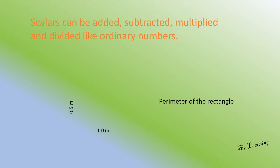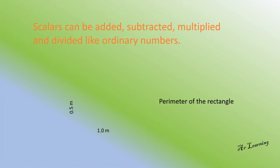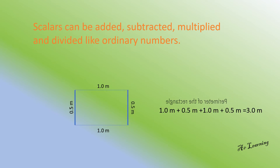Scalars can be added, subtracted, multiplied and divided just as ordinary numbers. For example, if the length and breadth of a rectangle are 1m and 0.5m respectively, then its perimeter is the sum of the lengths of the four sides.